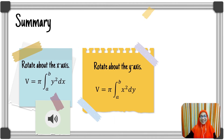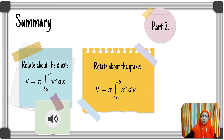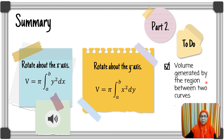Summary for today's lesson: when a region is rotated about the x-axis, the volume generated is V = π times the integral of y² with respect to x from x = a to x = b. Remember, rotated about the x-axis means we integrate with respect to x. When a region is rotated about the y-axis, the volume generated is V = π times the integral of x² with respect to y from y = a to y = b. If rotated about the y-axis, we integrate with respect to y. Please join part 2, where we will learn how to find the volume generated by the region between two curves.